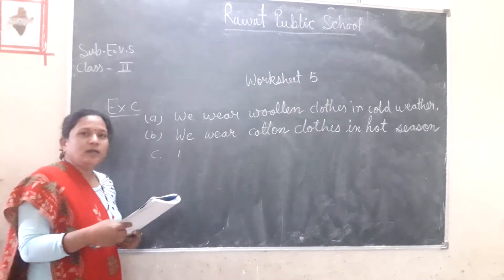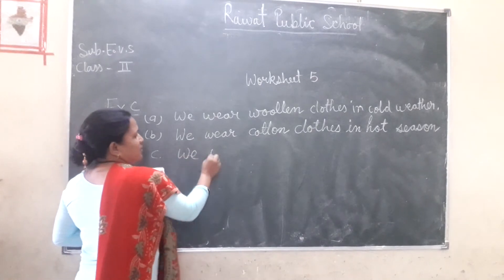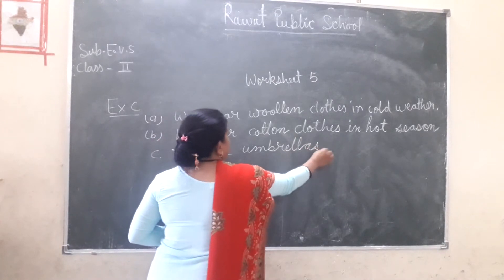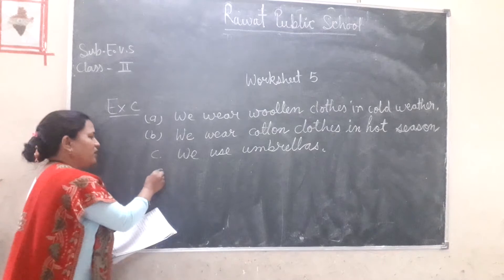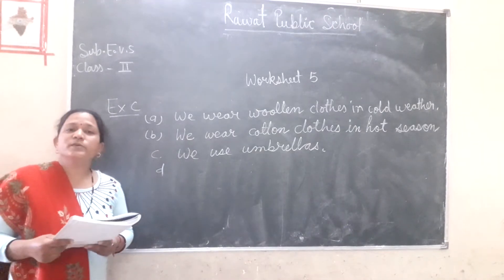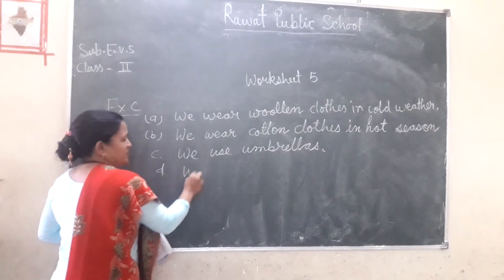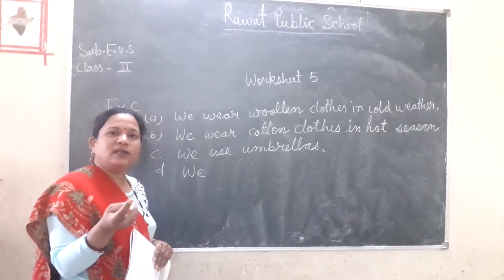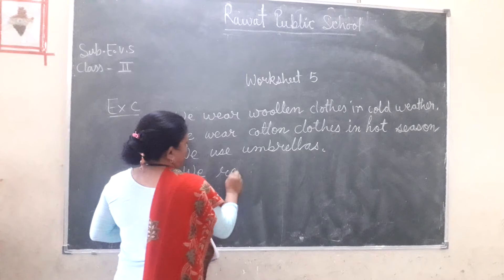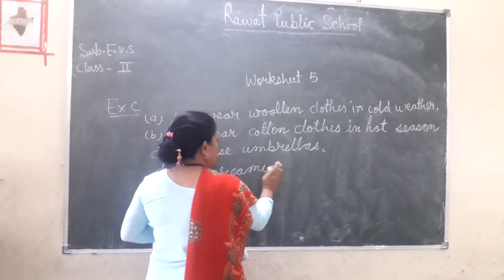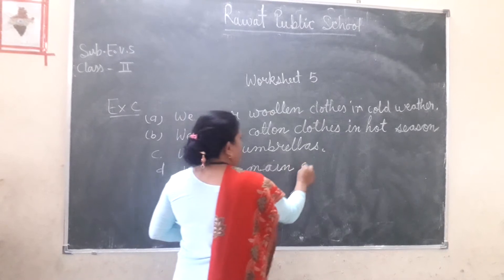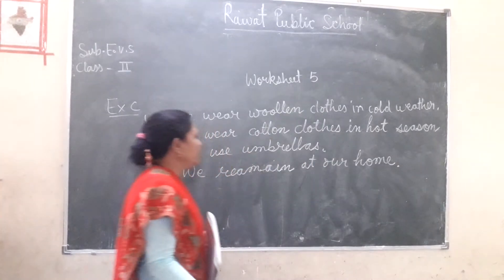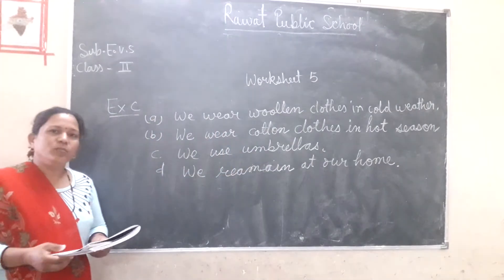The third row is rain. During rain, we use umbrellas. And if the rain is heavy, we remain at our home. We stay at home.